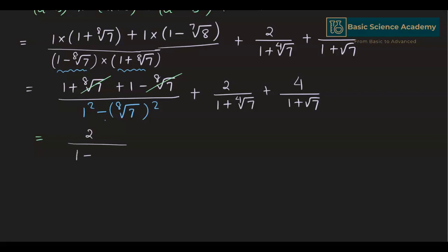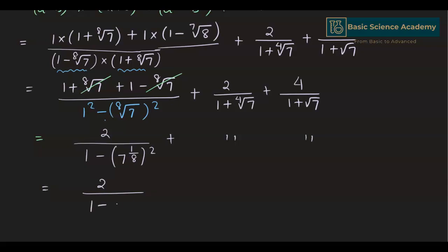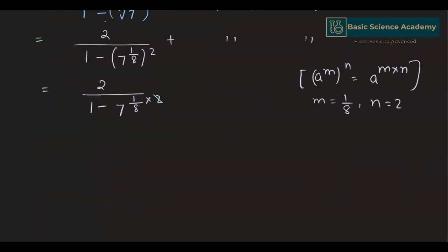We can write 8th root of 7 as 7 to the power of 1/8, so 8th root of 7 squared is 7 to the power of 1/8 multiplied by 2. Here m equals 1/8 and n equals 2, and 2 and 8 cancel out to give the exponent 1/4. This gives us 2 divided by 1 minus 7 to the power of 1/4.